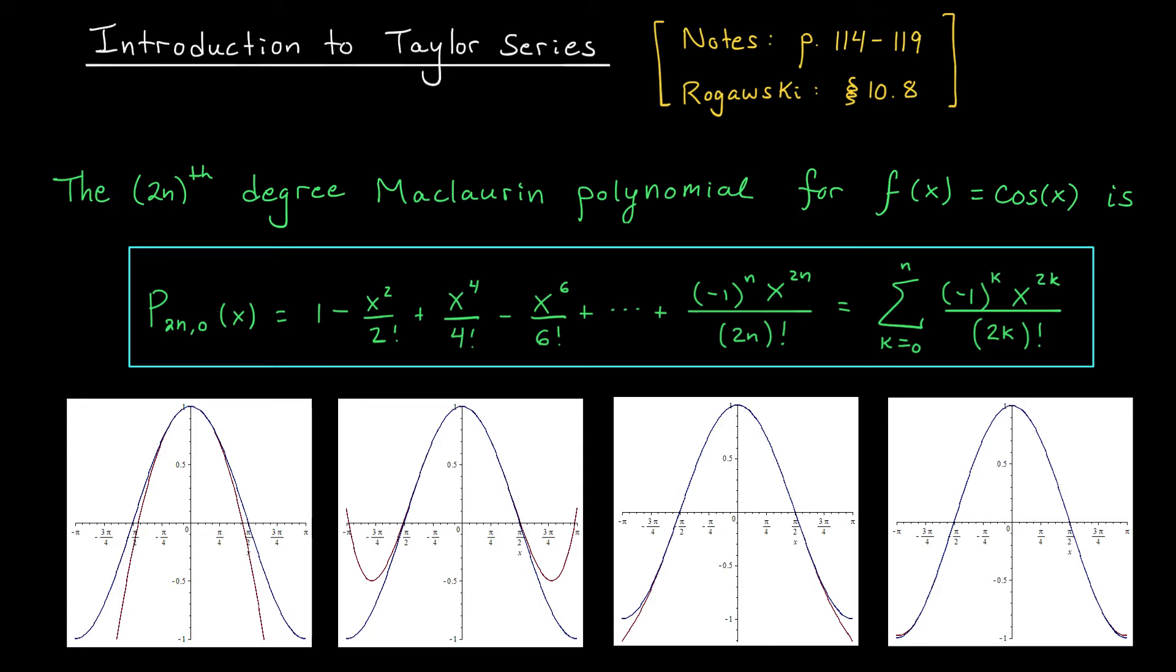Our discussion today will be centered around one particular example that we've seen several times in the past: the function f(x) = cos(x). We've seen that the Maclaurin polynomials of this function are made up of even powers of x divided by even factorials, and the signs of those terms alternate. So in particular the Maclaurin polynomial of degree 2n is given by something like this. The general term, the nth term, is given by (-1)^n times x^(2n) divided by (2n)!.